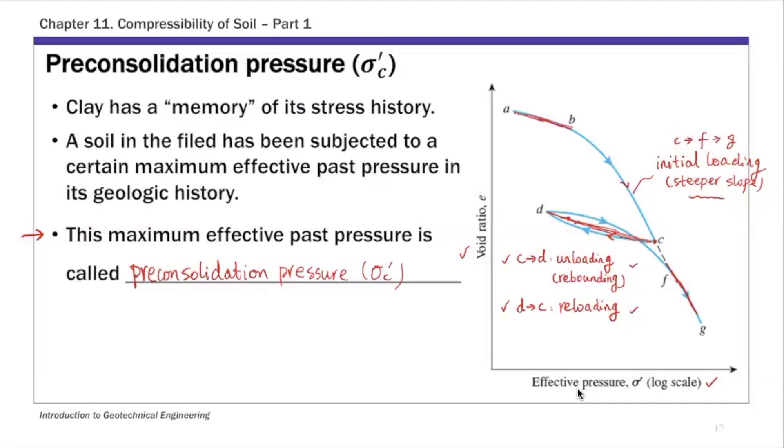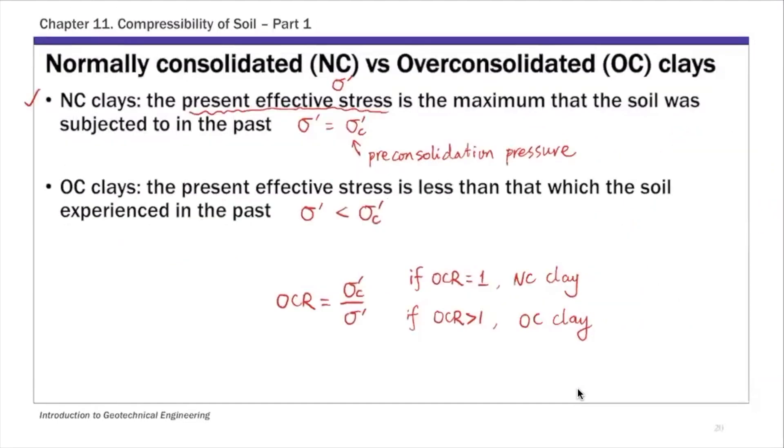Using the preconsolidation pressure, I introduced this NC and OC clay concepts last time. NC clays are clays where your current effective stress is the maximum the clay has ever experienced, so sigma prime equals sigma C prime. OC clays are basically clays where the current effective stress sigma prime is smaller than the past effective stress sigma C prime. These are two types of clays, and we define this overconsolidation ratio as the ratio of preconsolidation pressure sigma C prime over sigma prime. That's what we covered last time, and as I mentioned this will be important for settlement calculation, which is the focus of today's lecture.